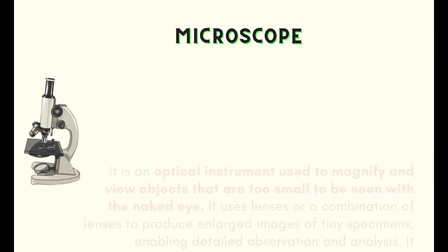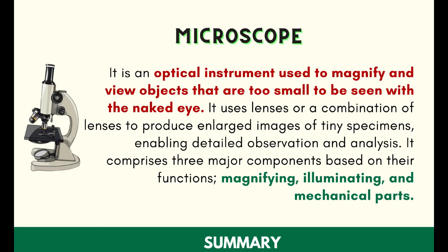Now let us summarize what we have learned in this lesson. We learned that a microscope is an optical instrument used to magnify and view objects that are too small to be seen with the naked eye. It uses lenses or a combination of lenses to produce enlarged images of tiny specimens, enabling detailed observation and analysis. It comprises three major components based on their functions: magnifying, illuminating, and mechanical parts.